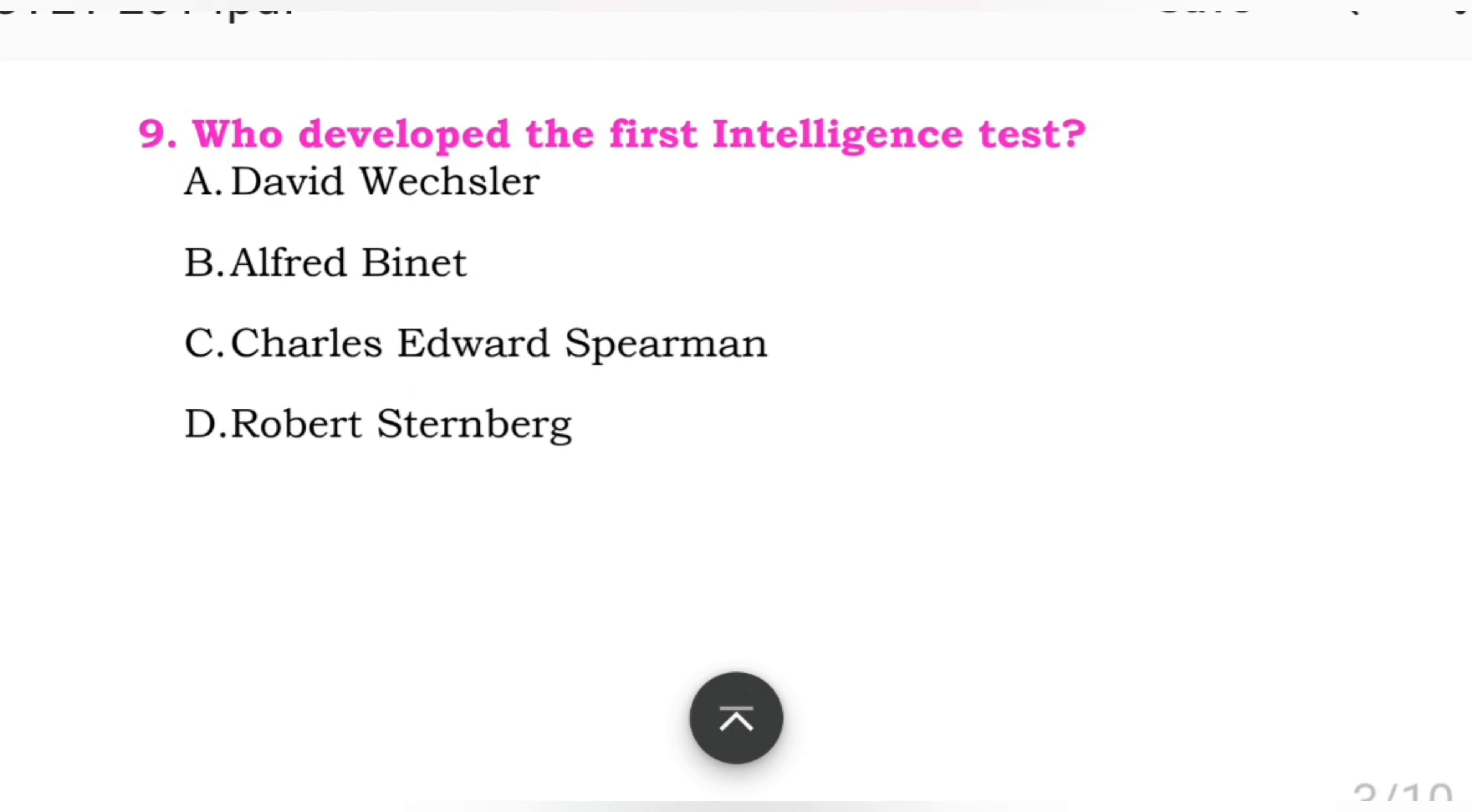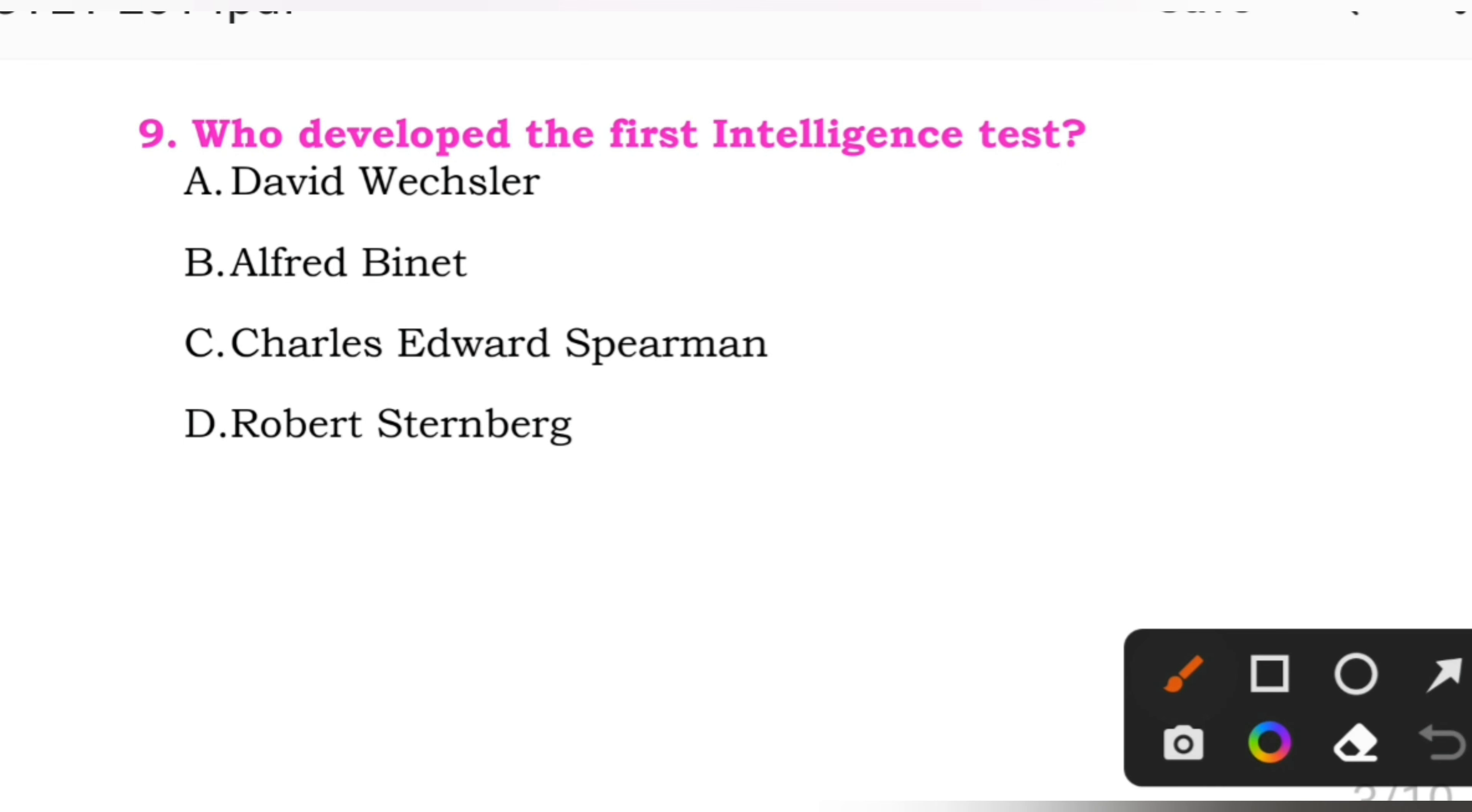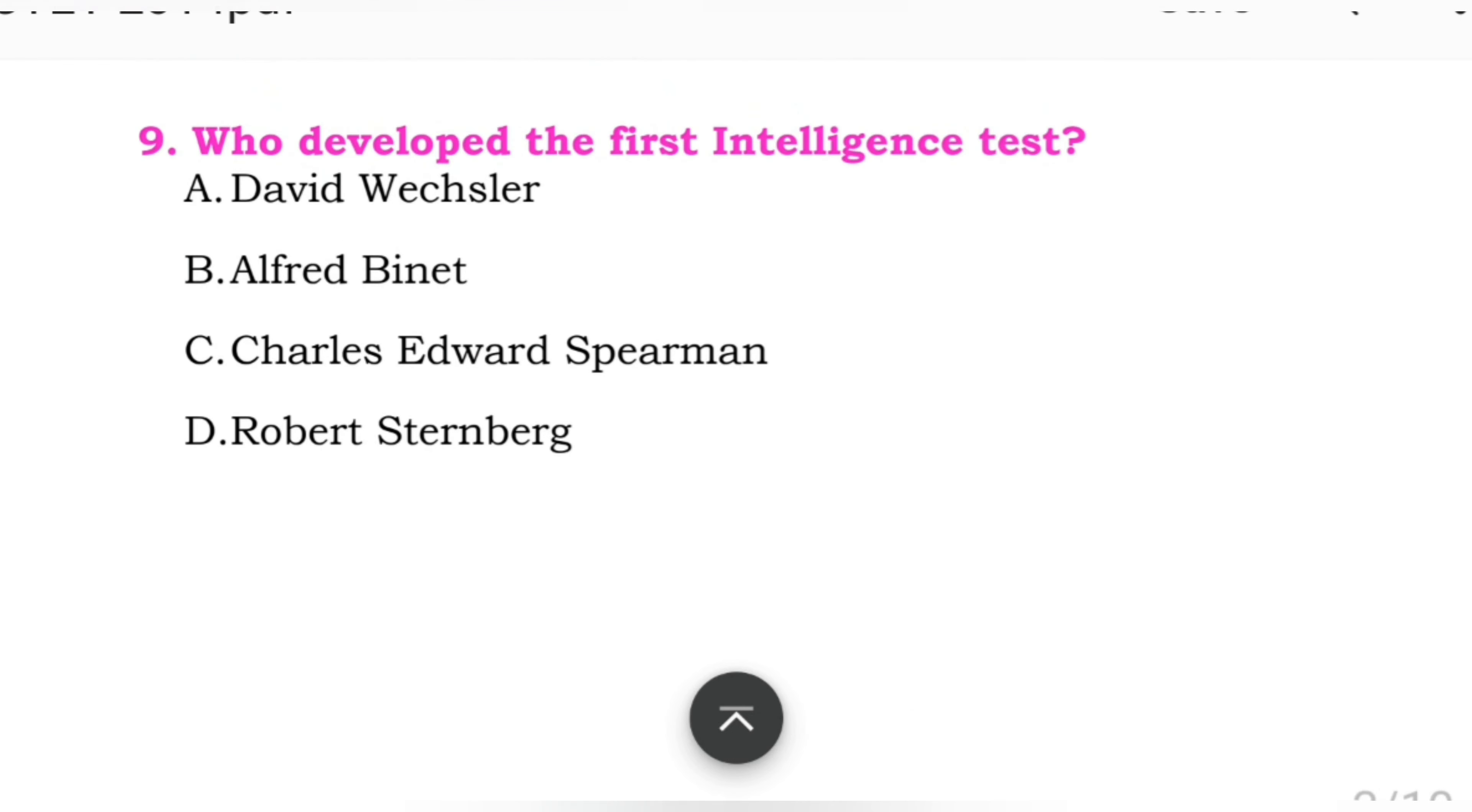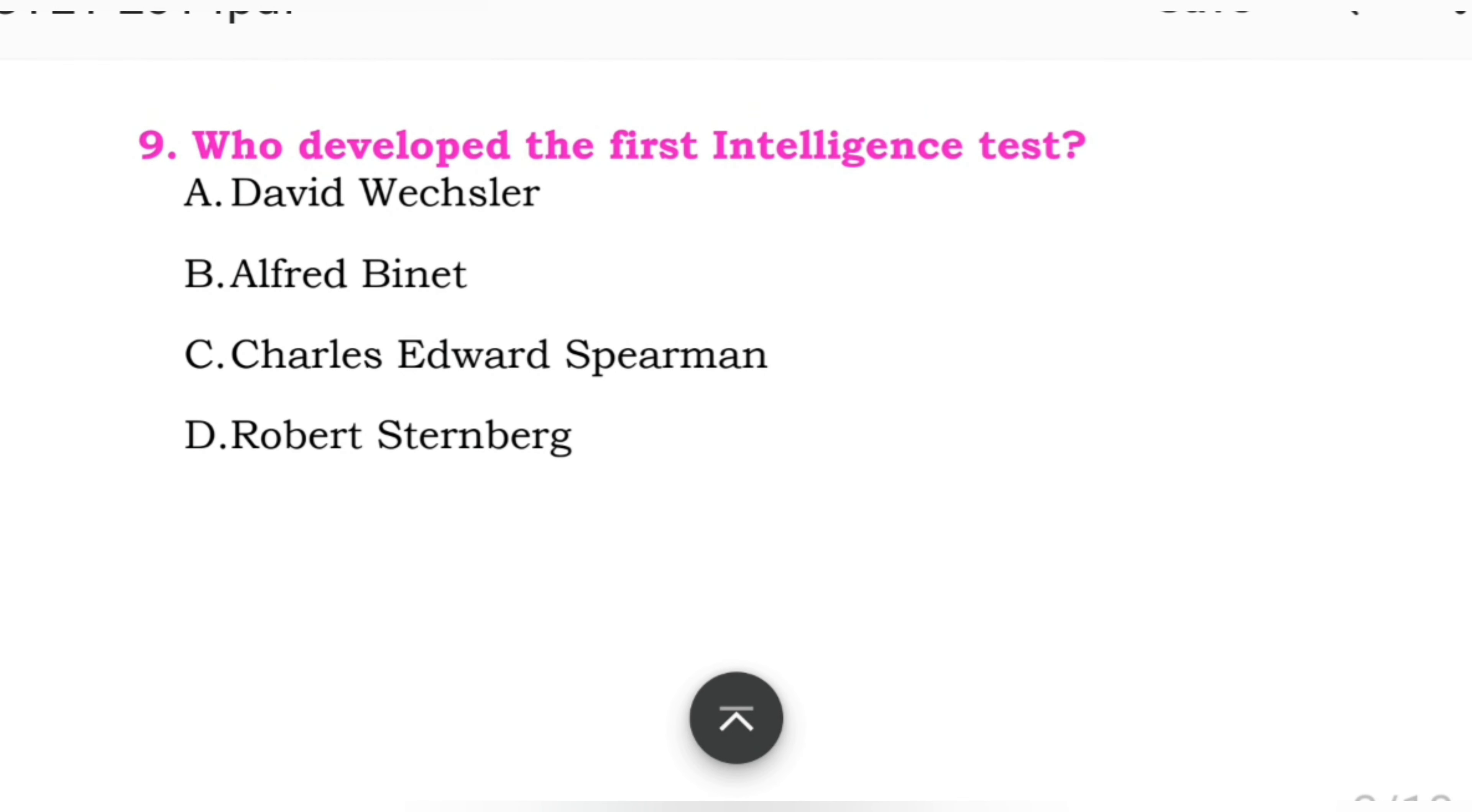Question number nine: Who developed the first intelligence test? Options: A: David Wechsler. B: Alfred Binet. C: Charles Edward Spearman. D: Robert Sternberg. Here the right answer is B, Alfred Binet.